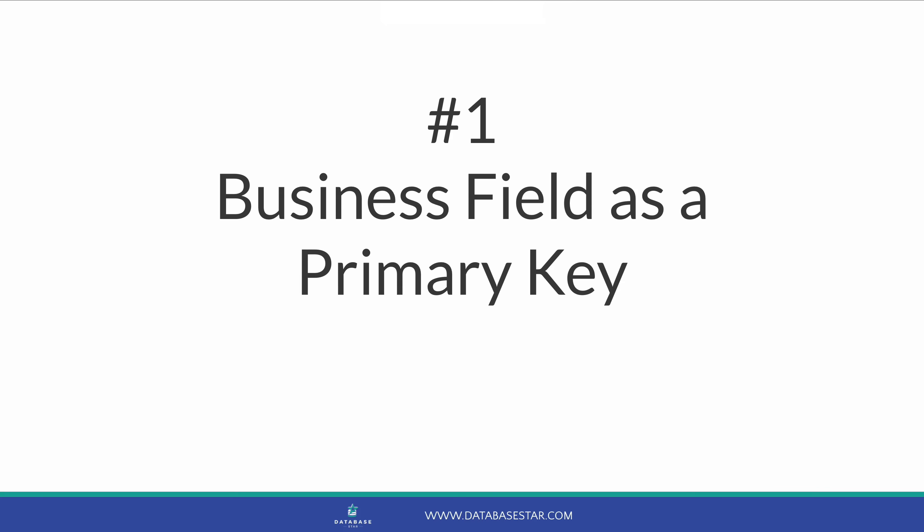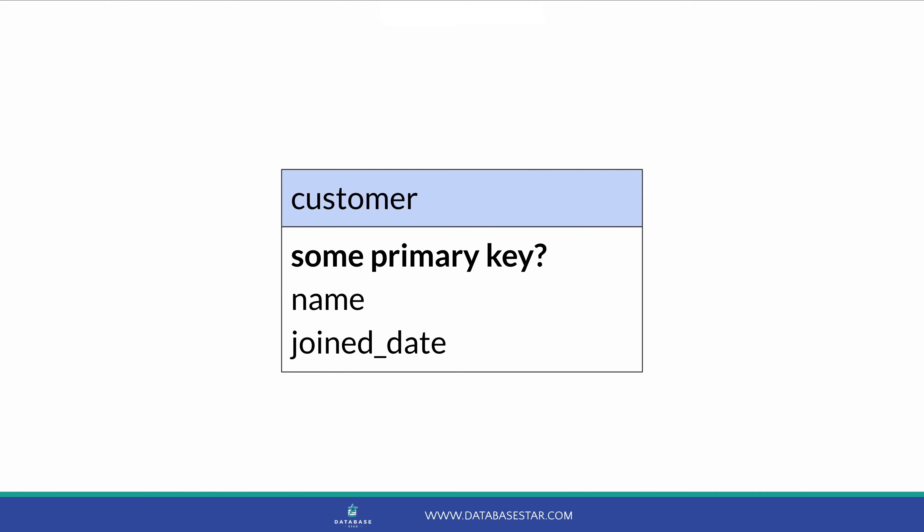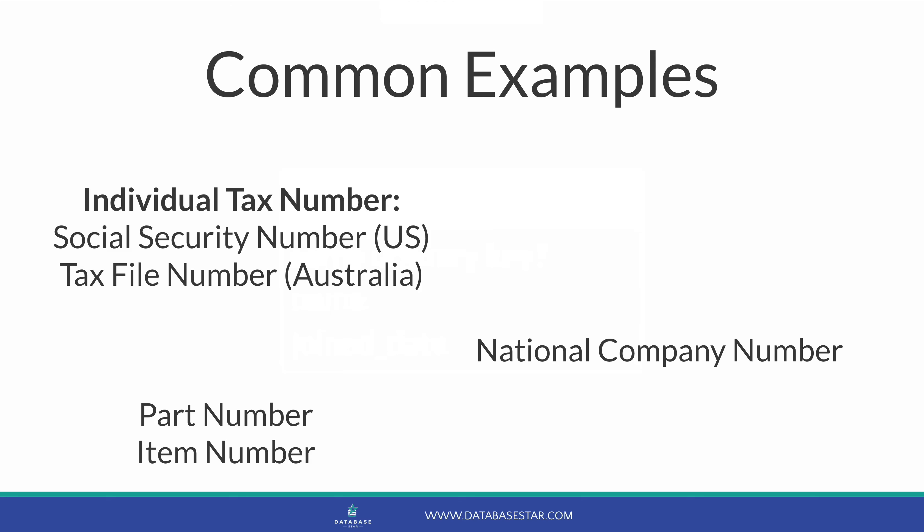The first mistake is using a business-relevant field for a primary key. When you design a table, one thing you'll need to define is a primary key — a column or set of columns that identify the record in a unique way. Many tutorials suggest using a field that's business relevant, something useful to the business or users, such as a social security number in the US, a tax file number in Australia, or a national company number registered with the government.